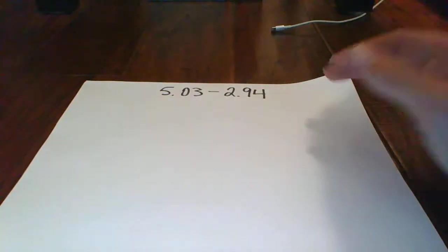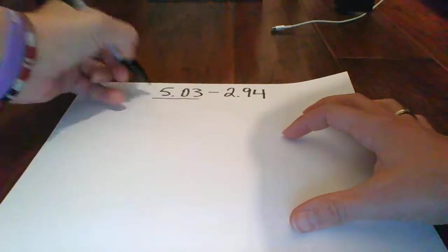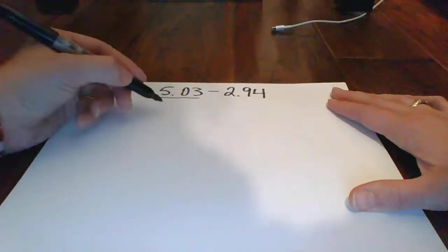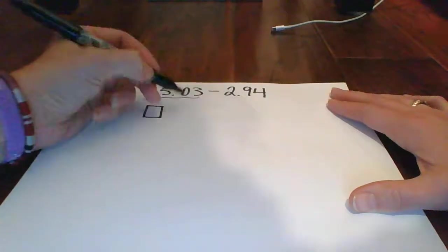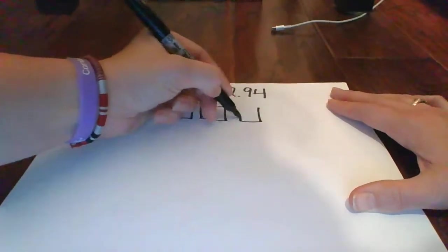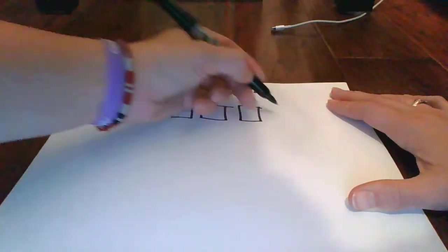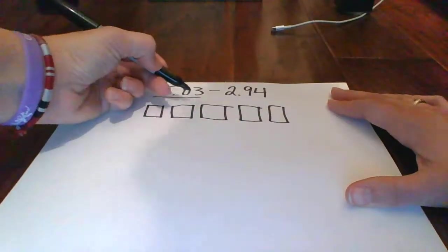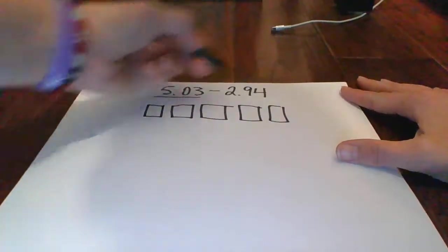So remember in subtraction, you just draw the largest number. Draw 5.03, or $5.00 and $0.03. My whole numbers are represented by 100 blocks, and then I just have $0.03. So make sure that you pay attention to what place value that is. That's in the hundredth place.